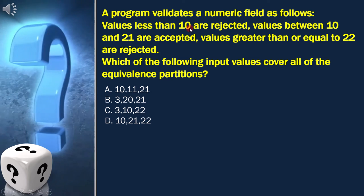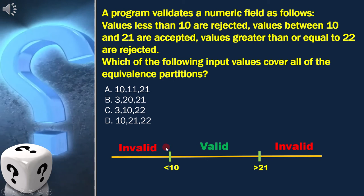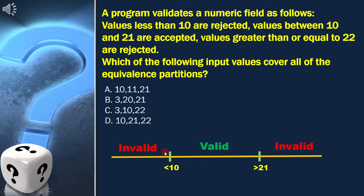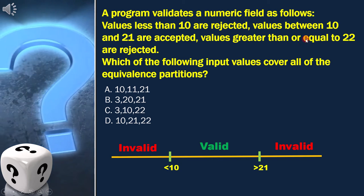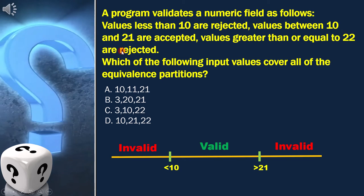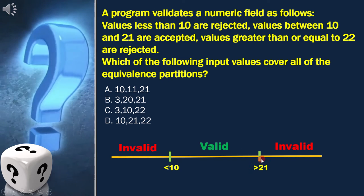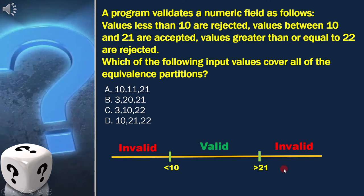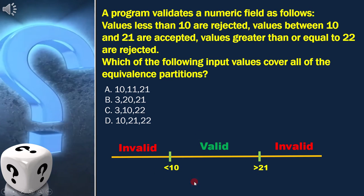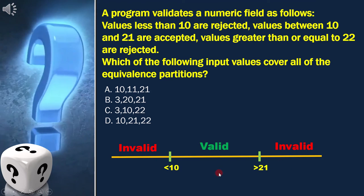values less than 10 are rejected. That means less than 10 is one boundary. It is also mentioned that values greater than or equal to 22 are rejected, which means that any value greater than 21 is rejected. So this is the second boundary. Here we have three equivalence classes.